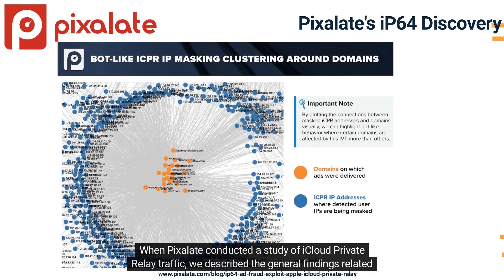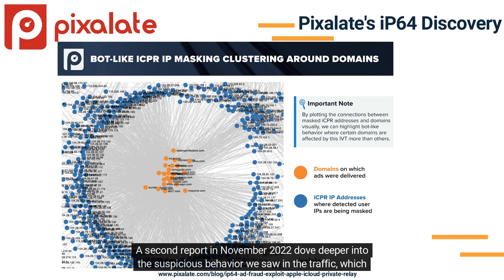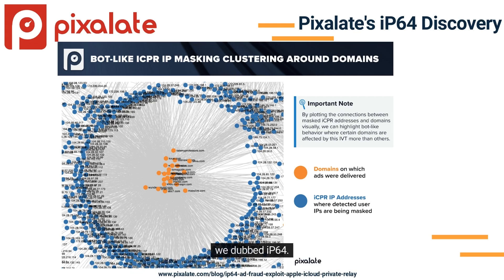When Pixelate conducted a study of iCloud Private Relay traffic, we described the general findings related to iCPR traffic and the potential exploit. A second report in November 2022 delved deeper into the suspicious behavior we saw in the traffic, which we dubbed IP64.